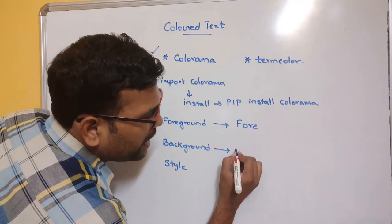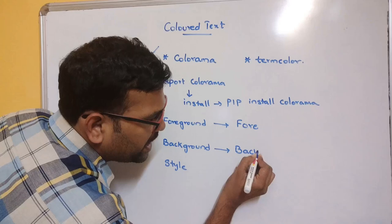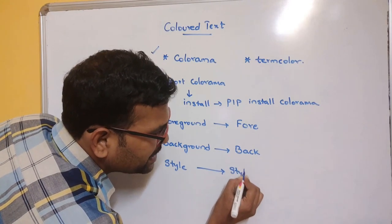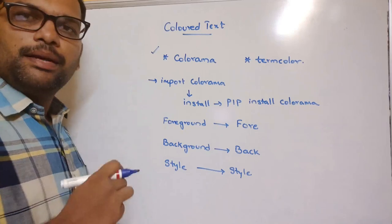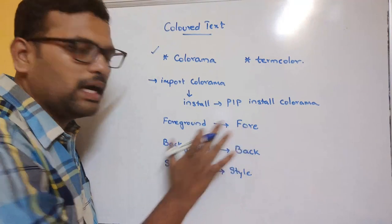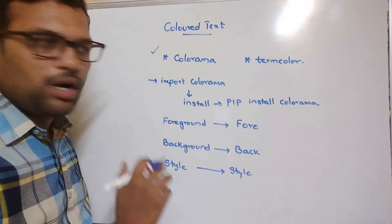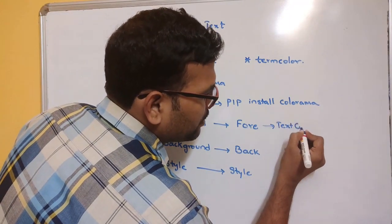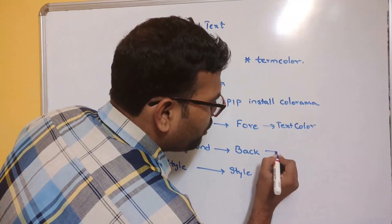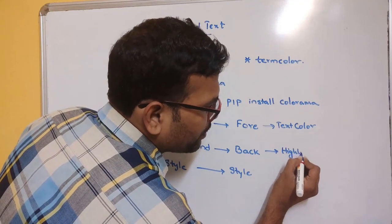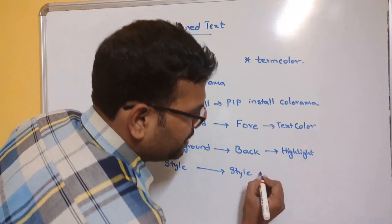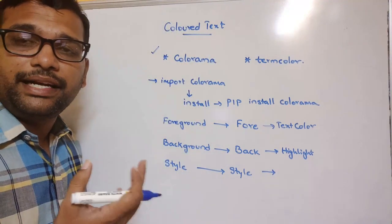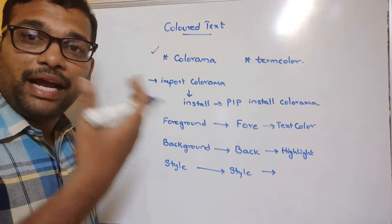Fore is represented as 'Fore' with capital F, Back is represented as 'Back' with capital B, and Style is represented as 'Style' with capital S. Foreground color means the text color, background color is the highlighting color, and Style is used to display text in dim, bright, or normal mode.